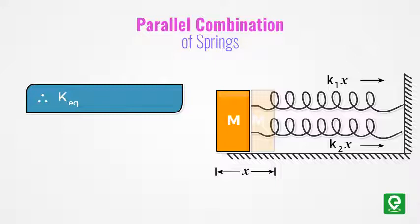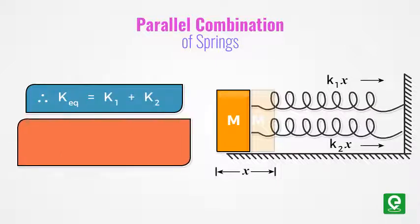The equivalent stiffness of the parallel combination is given by k_equivalent = k1 + k2, and the time period is equal to 2π times square root of mass divided by k_equivalent.